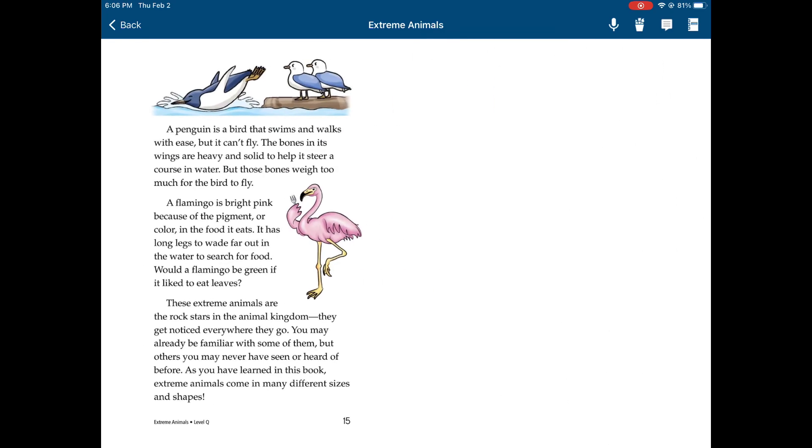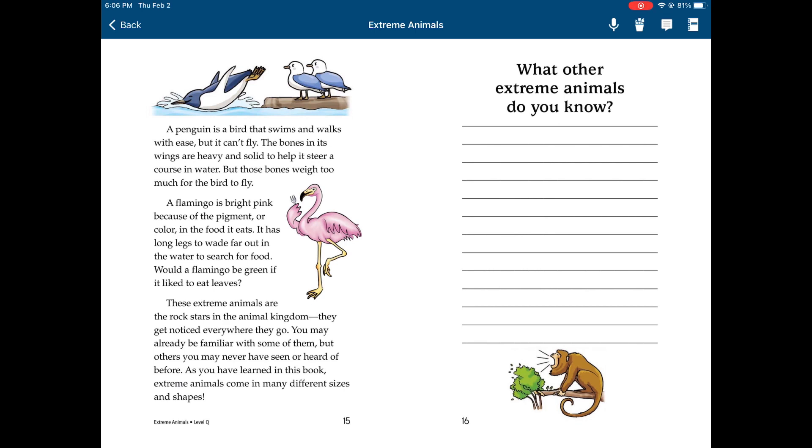A penguin is a bird that swims and walks with ease, but it can't fly. The bones in its wings are heavy and solid to help it steer a course in water, but those bones weigh too much for the bird to fly. A flamingo is bright pink because of the pigment or color in the food it eats. It has long legs to wade out in the water to search for food. Would a flamingo be green if it likes to eat leaves?